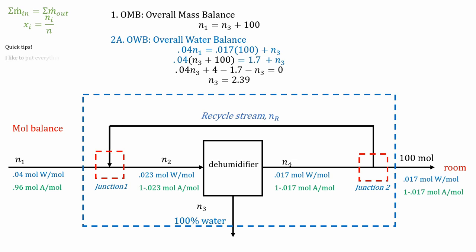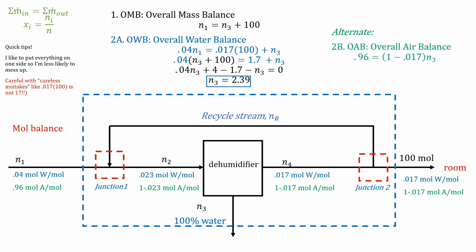So some quick tips. For me, for the algebra, I like to put everything on one side. So I'm less likely to mess up. But also careful with careless mistakes. So when I was redoing this problem, I said that 0.017 times 100 is 17, which is definitely not correct. And if you make a mistake like that, you're going to get some wrong answers. So be really careful with those tricky little mistakes. But nonetheless, we have our n_3. We can plug it into our first equation. But by the way, we have an alternate way to solve this. Instead of doing our overall water mass balance, we can do our overall air balance. And we only have one stream coming in and one stream coming out. So it's an easier way to solve for n_3. Regardless, you're still going to get n_3 has 2.39 moles. And n_1 is going to be 102 moles. Okay, do the algebra yourself. Make sure I'm doing the right algebra.